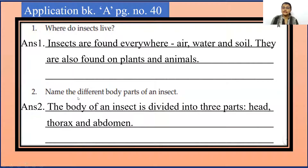Where do insects live? So insects are found everywhere — air, water and soil. They are also found on plants and animals.